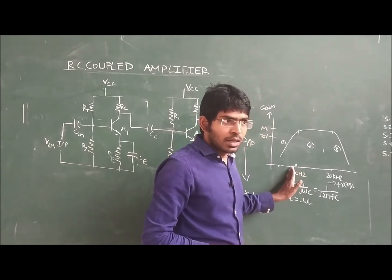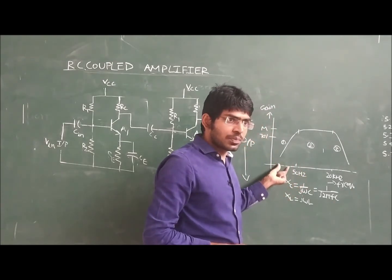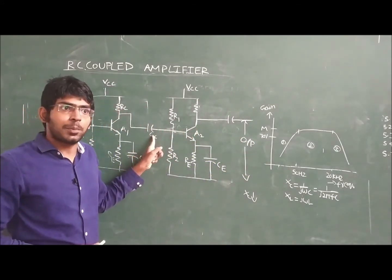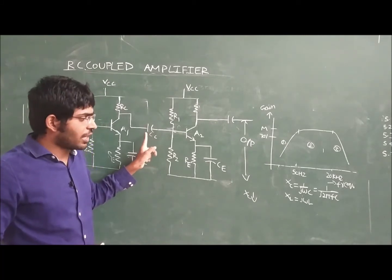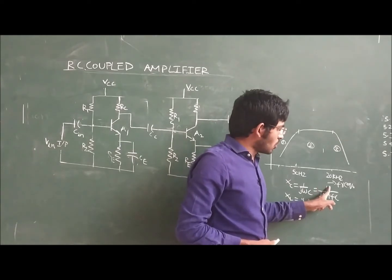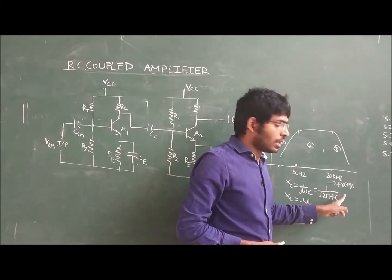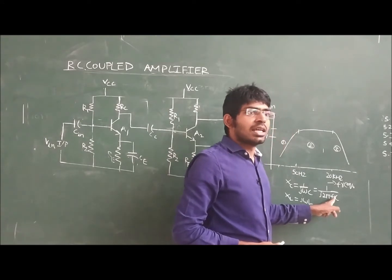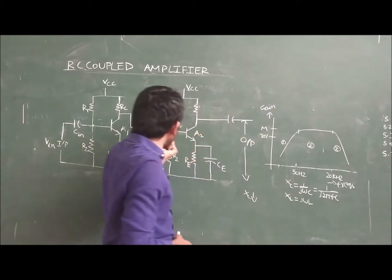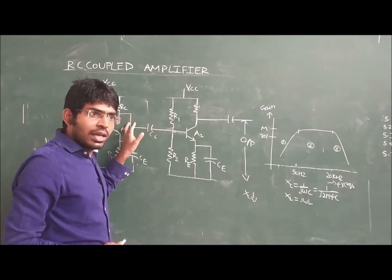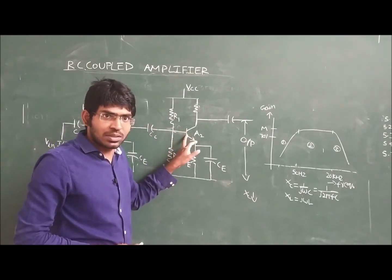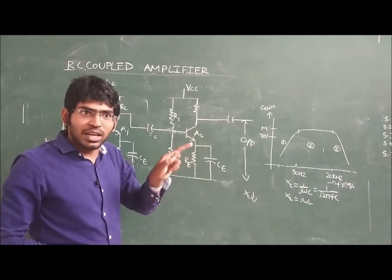Below 50 Hz means at very low frequencies, the reactance offered by the capacitor is very high. Why is the reactance offered by the capacitor very high? Because the reactance of a capacitor Xc is equal to 1 over jωC, which is 1 over j·2π·f·C. At low frequencies, Xc is high. Because the reactance is high, it allows only a small amount of the signal to pass to the next transistor. That is why the gain is very less.